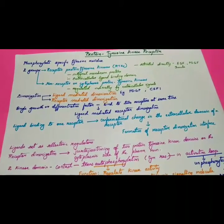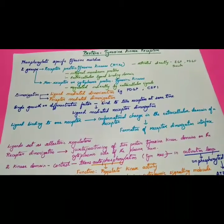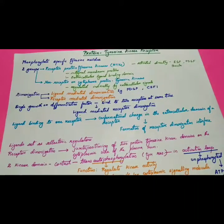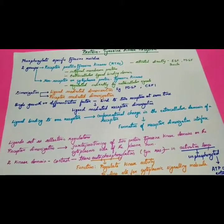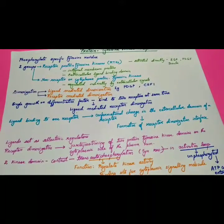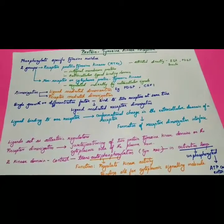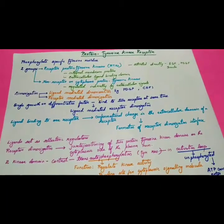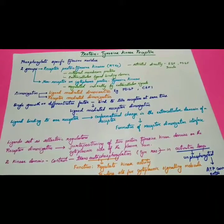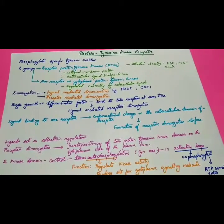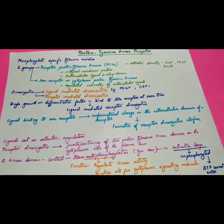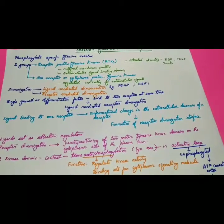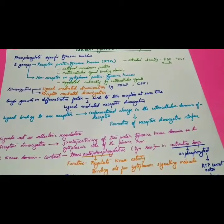Receptor tyrosine kinase, known as RTKs, is an integral membrane protein — a protein present in the membrane. It has an extracellular ligand binding domain and is activated directly by EGF, PDGF (platelet-derived growth factor), epidermal growth factor, or insulin. Non-receptor or cytoplasmic protein tyrosine kinases are regulated indirectly by extracellular signals.